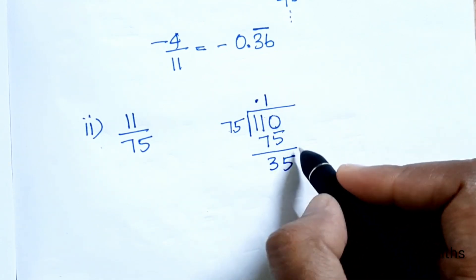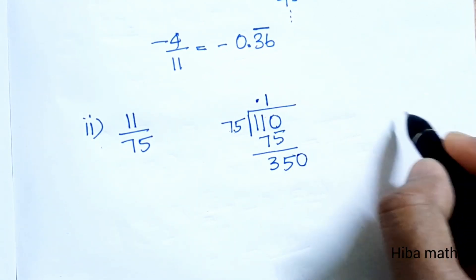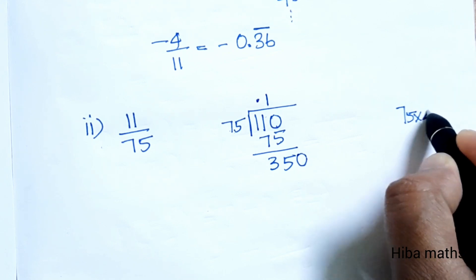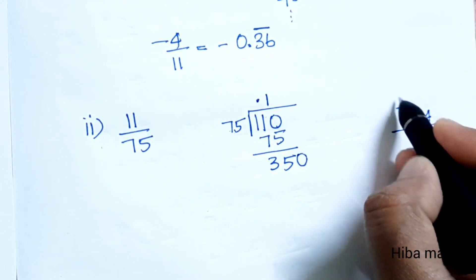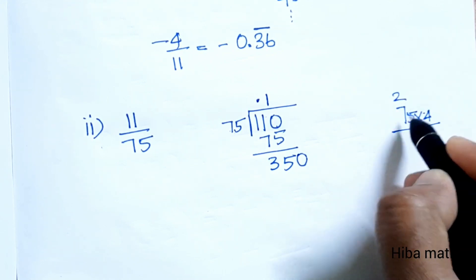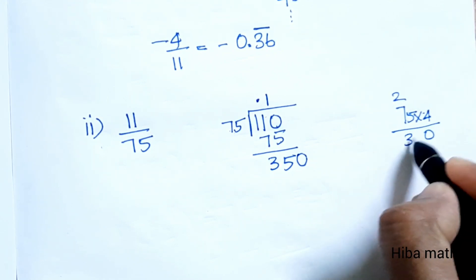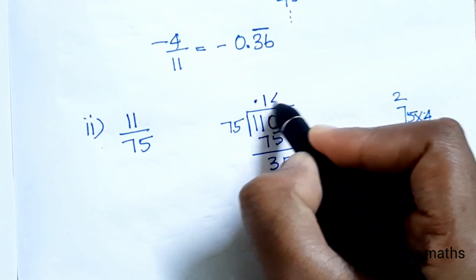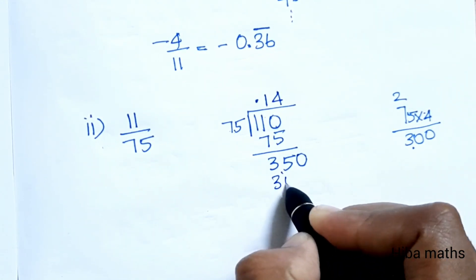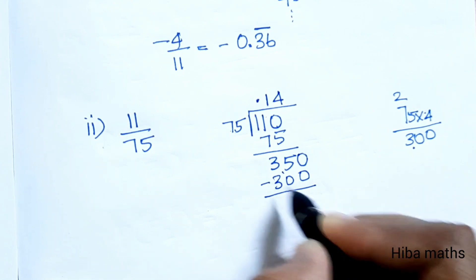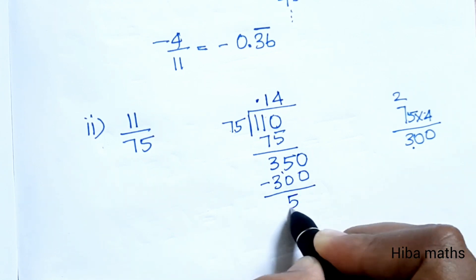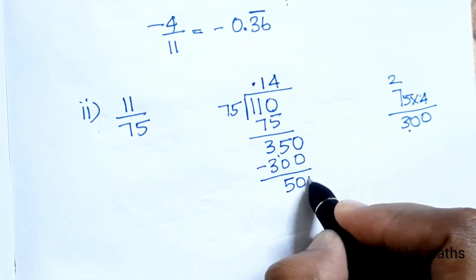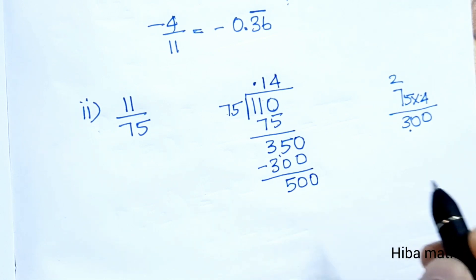So the decimal point gives 0 so far. Now 75 into 350 goes 4 times: 4 times 75 is 300. 350 minus 300 is 50. Bring down: 500 divided by 75. 50 is less than 75 again, so we continue the division.